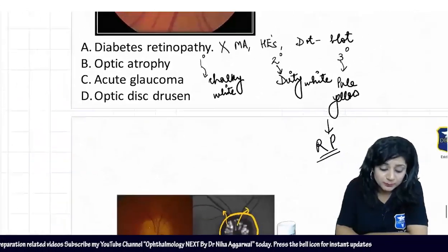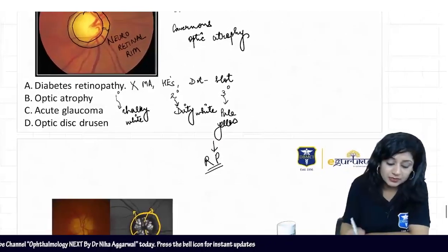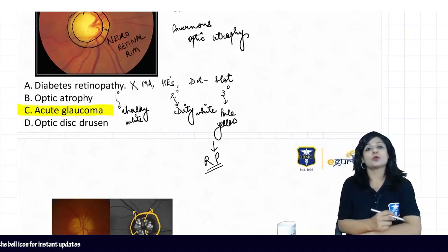So obviously it is not drusen. It's not the optic atrophy. You will not get cupping in cases of optic atrophy, and it's not diabetic retinopathy. Therefore, the answer to this question is acute glaucoma.